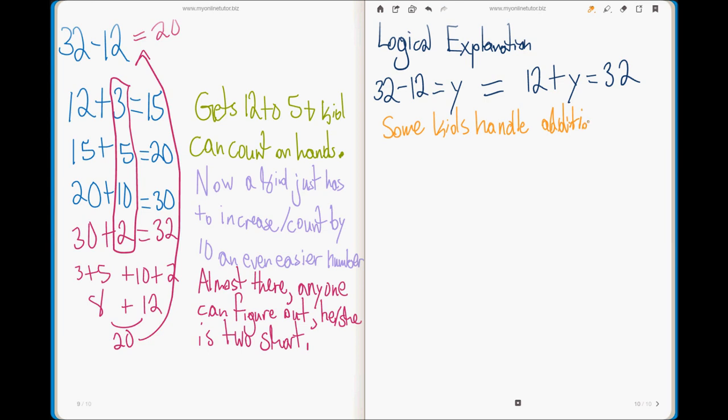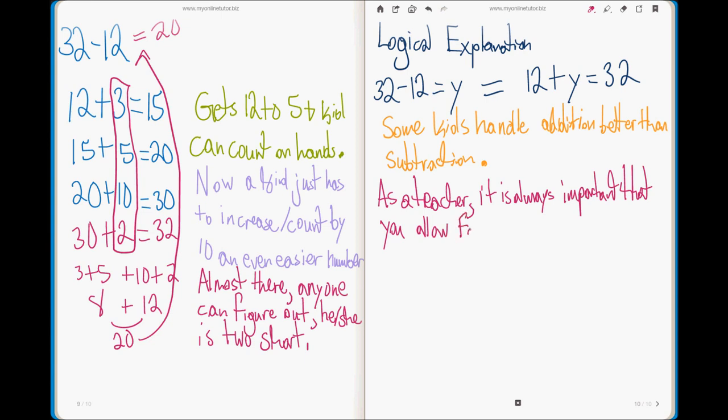the way I dictated it to them, but does the kid understand the principle behind what 32 minus 12 means? It means how many numbers are in between 12 and 32.